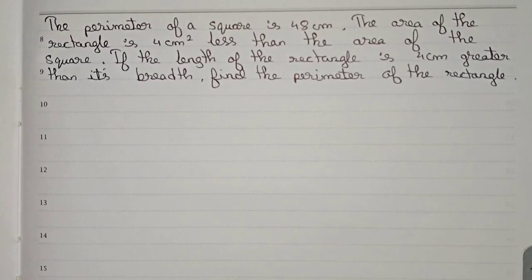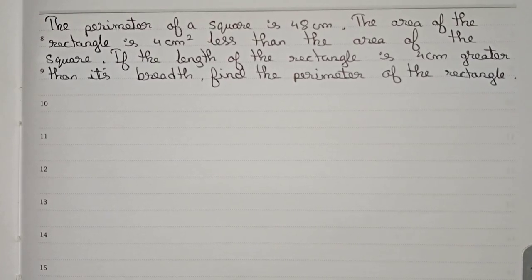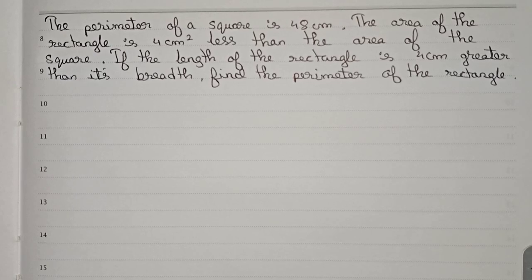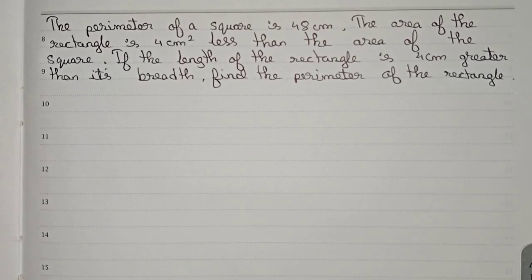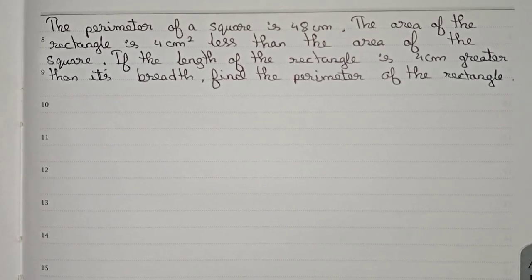Hello guys, welcome to this video. In this video, our question is: the perimeter of a square is 48 centimeters. The area of the rectangle is 4 centimeter square less than the area of the square. If the length of a rectangle is 4 centimeters greater than the breadth, then find the perimeter of the rectangle.